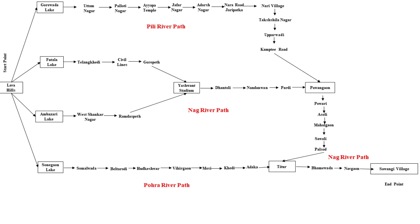Pili River originates from Lava Hills, joining Govada Lake, then flows through Uttam Nagar, Paliti Nagar, Ayapa Temple, Jafanagar, Adarsh Nagar, Nara Road, Jari Patka, Nari Village, Takshashila Nagar, Uppar Wadi, Kampti Road, and meets Nag River at Pavangaon.